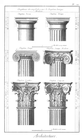Brise soleil: projecting fins or canopies which shade windows from direct sunlight. Bullseye window: small oval window, set horizontally.